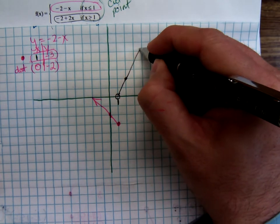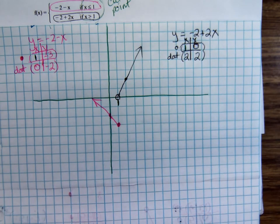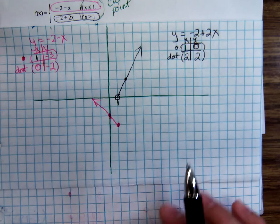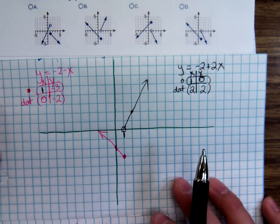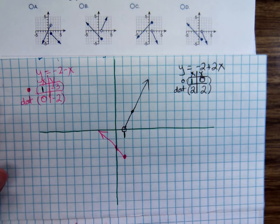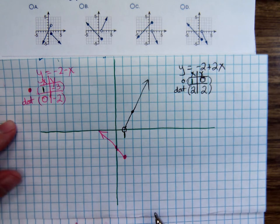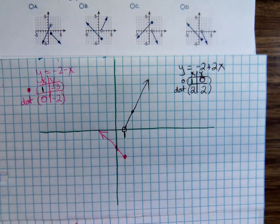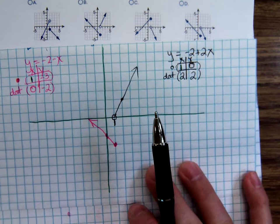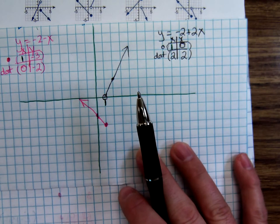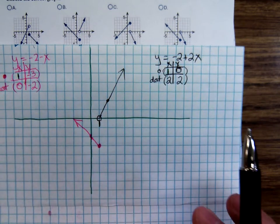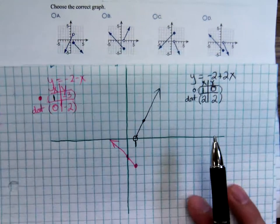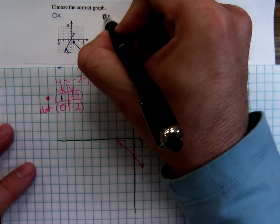Looking at the answer choices, it looks like B. Let's graph one more — number three. Drawing the rectangular coordinate system, the cut point to label on the x-axis is negative two.